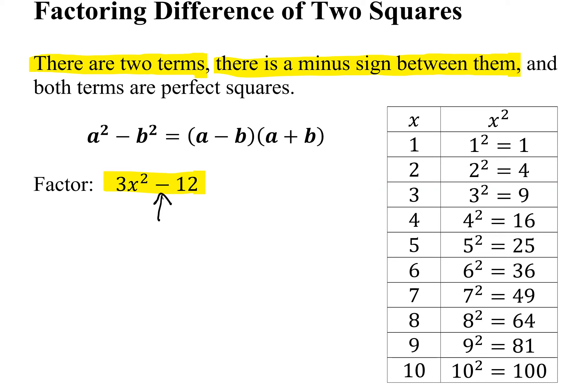And the last thing we have to have is both terms have to be perfect squares. Well in this case, is 3 and 12, are they both perfect squares?